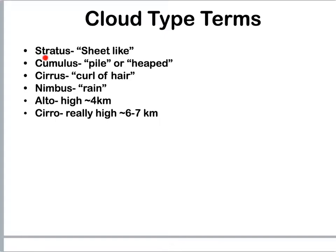First up is stratus clouds. Stratus clouds are very sheet-like, so they're very flat, much like a sheet would be. Next up we have cumulus clouds. Cumulus is a root word meaning pile or heap, so those are your big white puffy clouds.